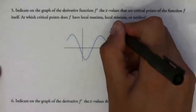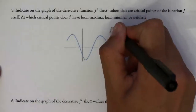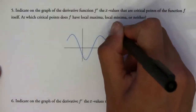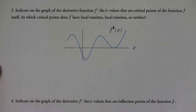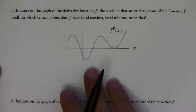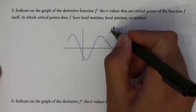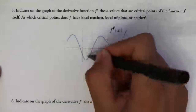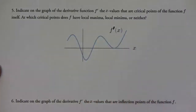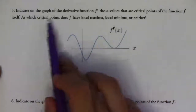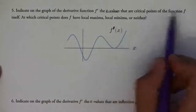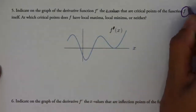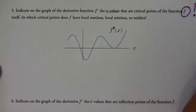Now this one is different, because this is the graph of the first derivative — not necessarily the one we just did, but this is a graph of the first derivative. And the question is: indicate the x values that are critical points of the original function.